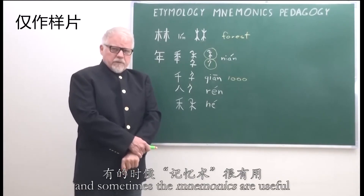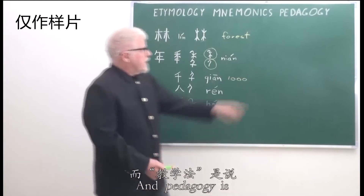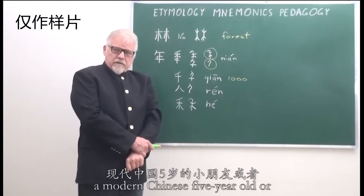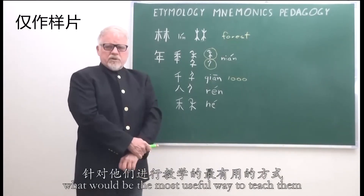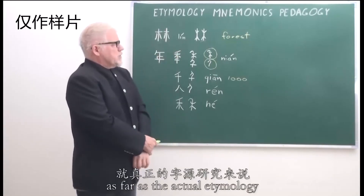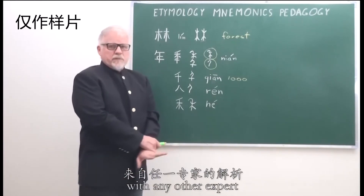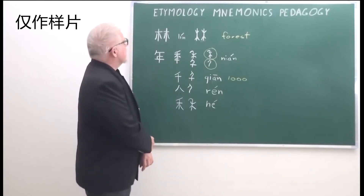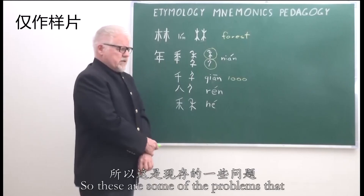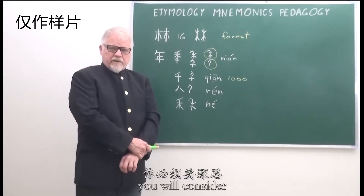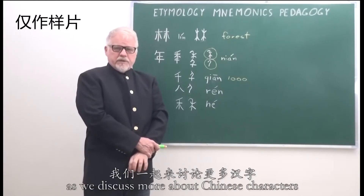Sometimes mnemonics are useful, because if you have to memorize thousands of characters, mnemonics are sometimes the quickest way to do it. Pedagogy means thinking about whether you're teaching a modern Chinese five-year-old or a foreign high school student, and figuring out what would be the most useful way to teach them. As for the actual etymology, I will probably disagree with 10 to 20 percent of explanations with any other expert, because there is a lot of disagreement — maybe 10 percent of characters, we don't understand their etymology. These are the problems to consider if you're interested in etymology, mnemonics, or pedagogy. I'm Michael Hanse, and hopefully you'll join me next time as we discuss more about Chinese characters.